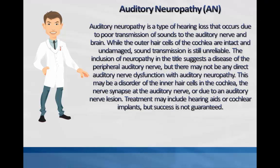Auditory neuropathy is a type of hearing loss that occurs due to poor transmission of sounds to the auditory nerve and brain. While the outer hair cells of the cochlea are intact and undamaged, sound transmission is still unreliable. The inclusion of neuropathy in the title suggests a disease of the peripheral auditory nerve, but there may not be any direct auditory nerve dysfunction. This may be a disorder of the inner hair cells in the cochlea, the nerve synapse at the auditory nerve, or due to an auditory nerve lesion. Treatment may include hearing aids or cochlear implants, but success is not guaranteed.